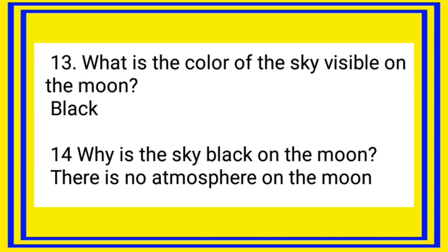Question: What is the color of the sky visible on the moon? Answer: Black. Question: Why is the sky black on the moon? Answer: There is no atmosphere on the moon. You can download the PDF file from the description box.